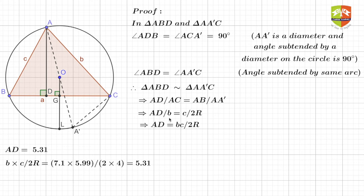Clearly by cross multiplying, you can see AD is bc upon 2R. This is what we intended to prove, that means we got this result that altitude length will be equal to product of the adjacent sides.